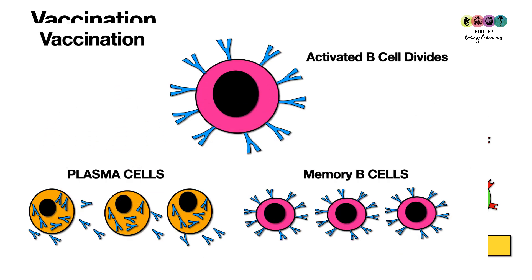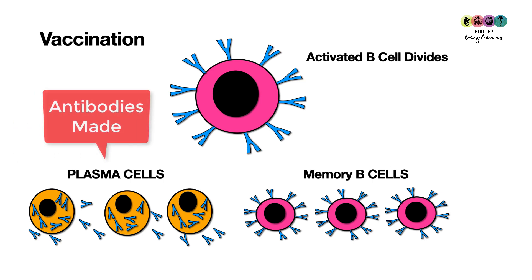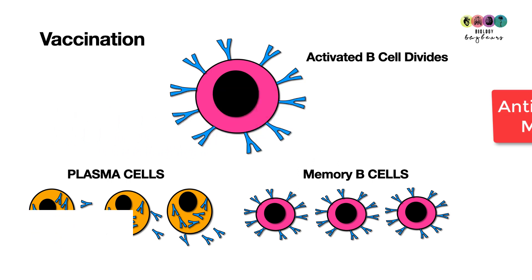The B cell — the one that has recognized the antigen introduced in the vaccine — is now fully activated and undergoes division to produce plasma cells. Those plasma cells produce lots of that specific antibody. Memory B cells are also produced, and they will remember how to produce those plasma cells that make that specific antibody should they need to in the future.